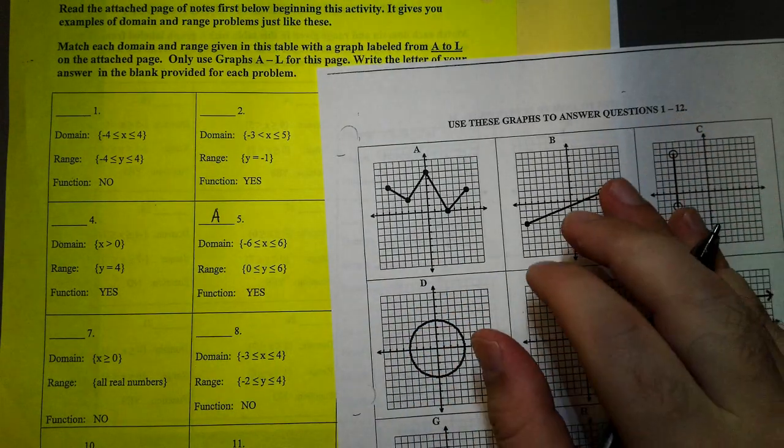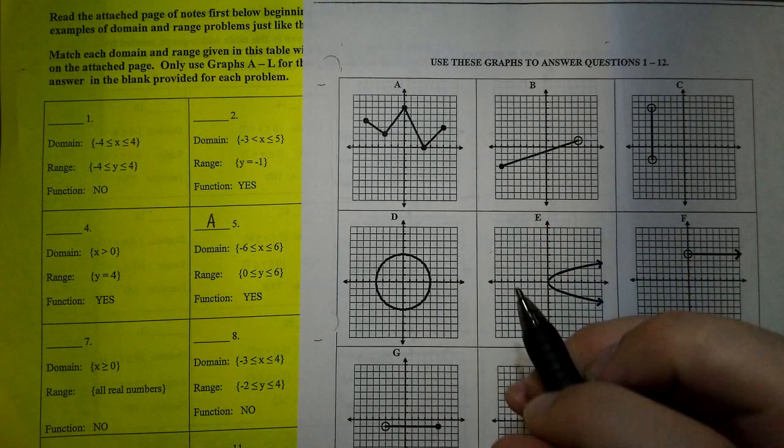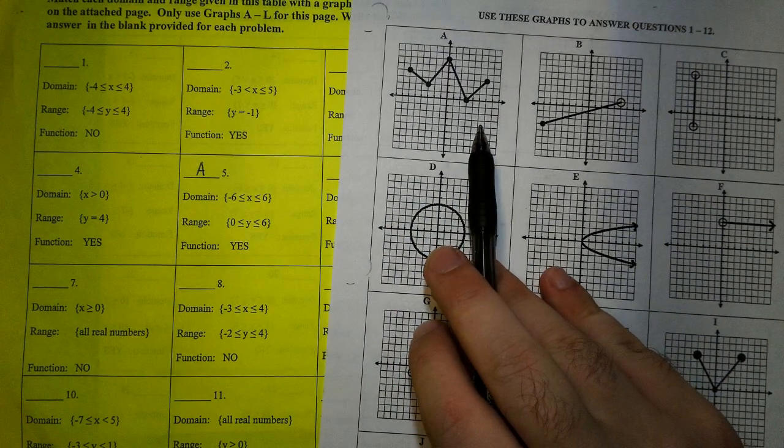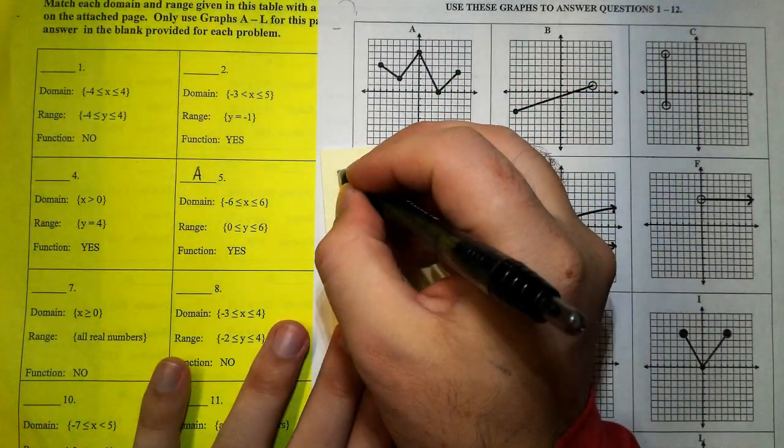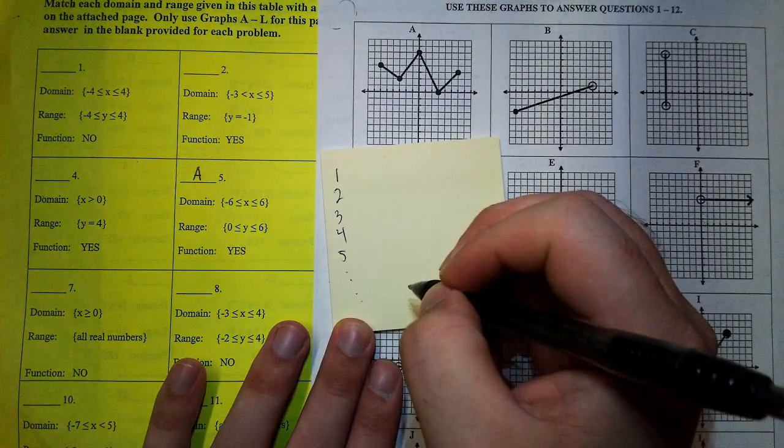For those of you that don't have access to a printer, then just look at the graphs and then on a sheet of notebook paper, write 1 through 12, all the way down to 12.